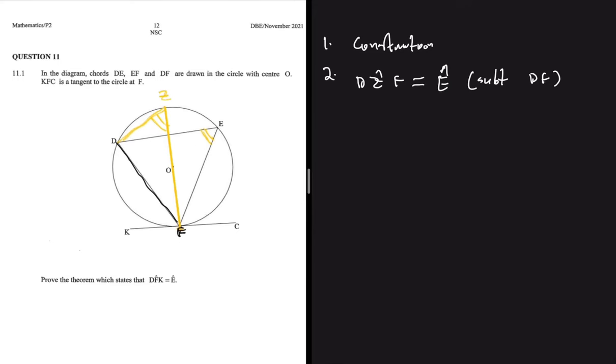We can move to step number three. In step three we're going to prove that angle DFK is also equal to angle DZF. If we can prove that, then we have proved that DFK is equal to E.